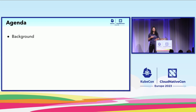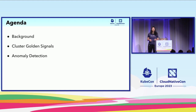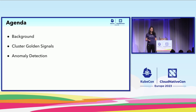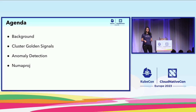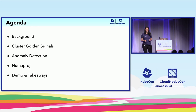My name is Anusha Raghunathan and my co-presenter is Venkat Gunapati. Both of us are principal engineers working on the Kubernetes platform infrastructure at Intuit. Today we'll be talking about what we are here for — smarter golden signals — why we explored this project, what cluster golden signals mean, anomaly detection for a Kubernetes cluster, tools we explored, and we'll introduce you to NumaProj, a new open source project incubated at Intuit. We'll finish with a demo and takeaways.